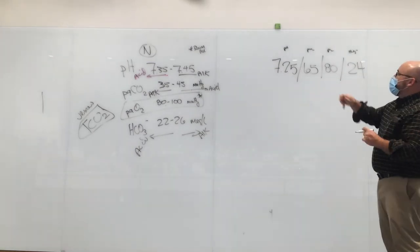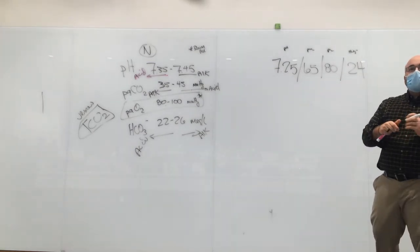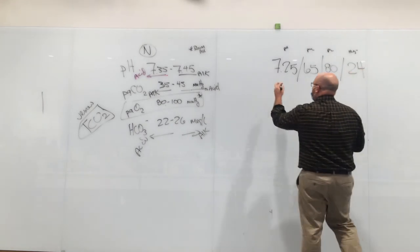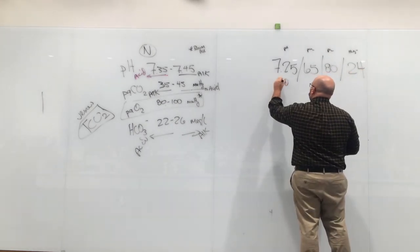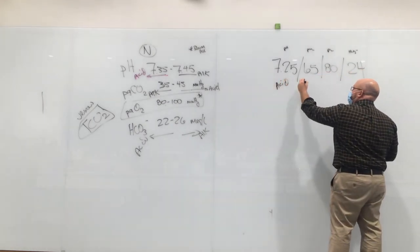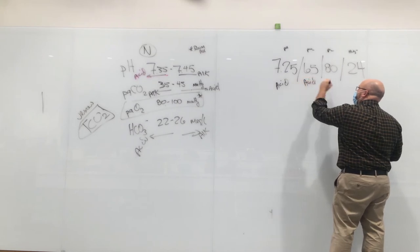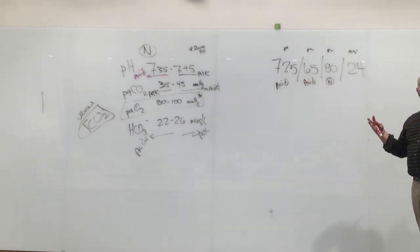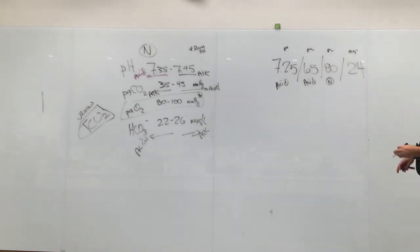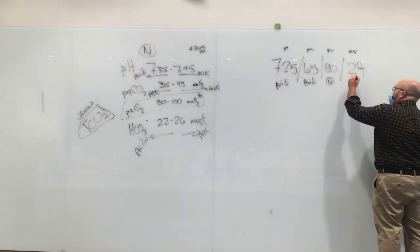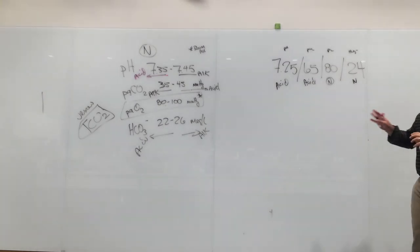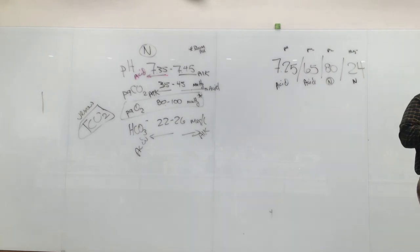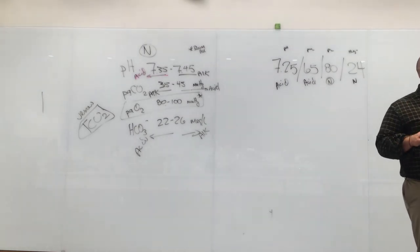Let's go through this blood gas: 7.25 / 65 / 80 / 24. The pH of 7.25 is acidosis. CO2 of 65 is acidosis. PaO2 of 80 — we'll say normal, assuming room air. Bicarb of 24 is normal.